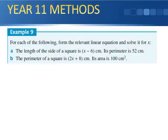Example 9 says for each of the following, form the relevant linear equation and solve it for x. Part A says the length of the side of a square is x minus 6 centimeters. Its perimeter is 52 centimeters. If I have a square, all the sides are the same: x minus 6.